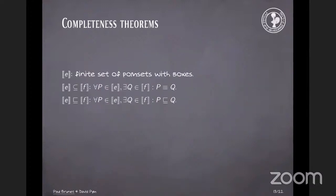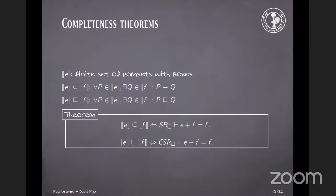And again, we can make this work with the semantics. So now the semantics of a program is a finite set of Pomsets with boxes. And we have two partial orders between them. The first one says that every Pomset in E is isomorphic to some Pomset in F. And the second one says that every Pomset in E is subsumed by some Pomset in F. And this corresponds exactly to the axioms I listed on the previous page. So up to now, everything I said has been proved in Coq.